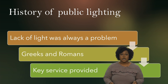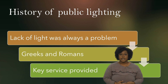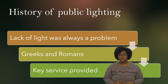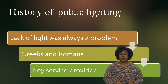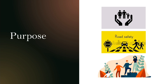For several decades, public lighting has been a key service provided by public authorities at the local and city level. The purpose of public lighting is to artificially extend the hours in which it's light. Because of this, it can ensure road safety, social safety and quality of life in public areas in the evening and at night.